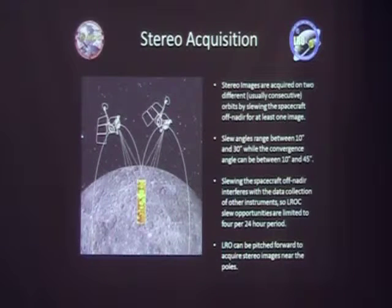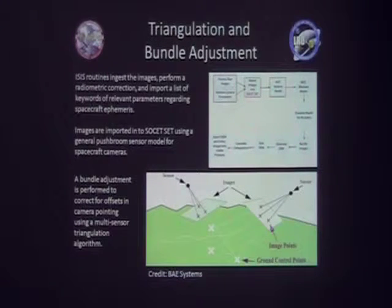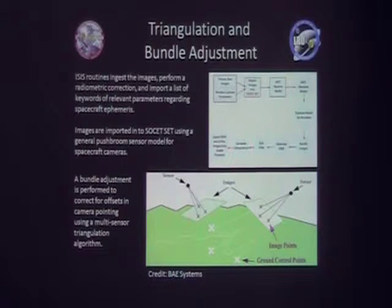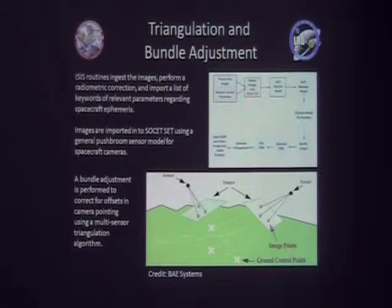We can also pitch the spacecraft forward to acquire stereo images near the poles. First we get the images, but they don't match up very well with each other, so we have to perform a bundle adjustment. We import the images into SOCET SET using ISIS routines. They perform a radiometric correction and attach a list of keywords with relevant parameters. Those images are then imported into SOCET SET using a general first-order sensor model, and then we perform a bundle adjustment by picking tie points between the images and using the multi-sensor triangulation algorithm in SOCET SET.